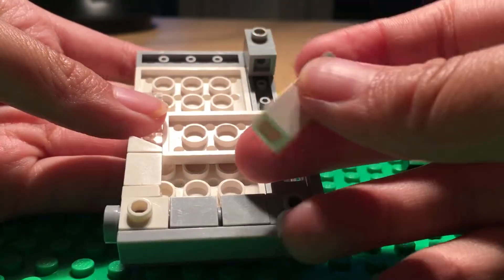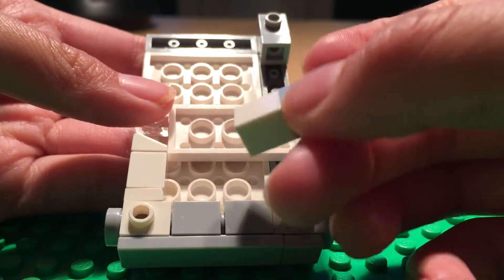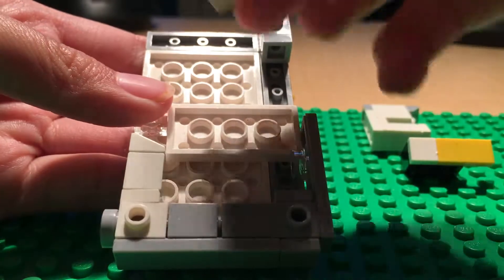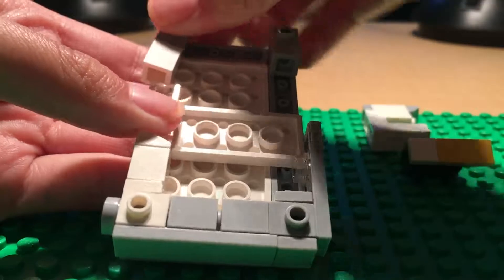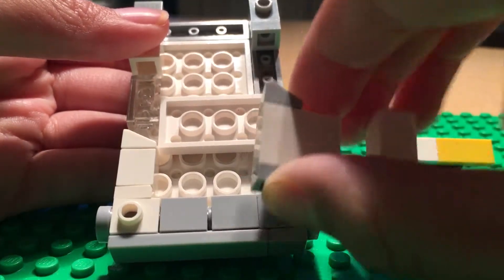Take the other one with the one by one brick, the one by one white brick, place it there. And then take your drawer, candy drawer, and put it right there.